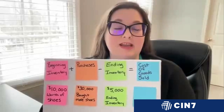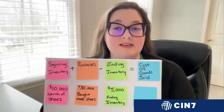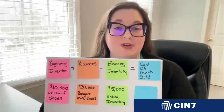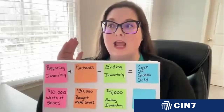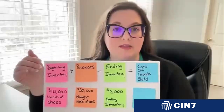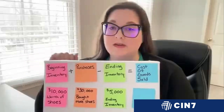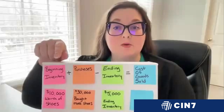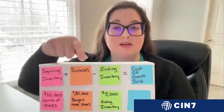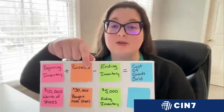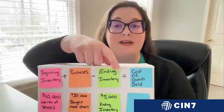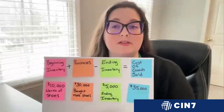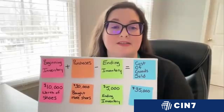What does that inventory look like? You're looking at $5,000 left of that inventory for your shoes, which is amazing — that's half of what you started the year with. So you know that your investment paid off. But by how much? We use the equation: $10,000 plus $30,000 — that's $40,000 — minus how much we've ended with. And that actually leaves us with our cost of goods sold at $35,000.